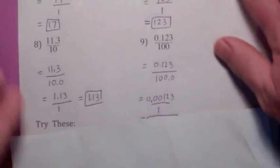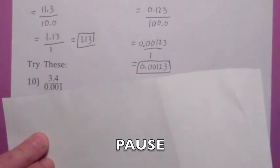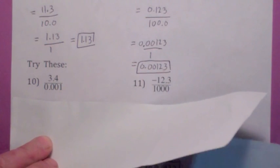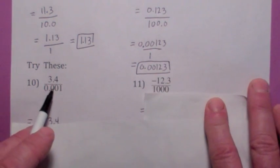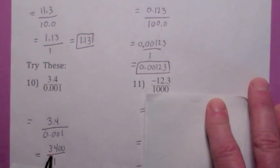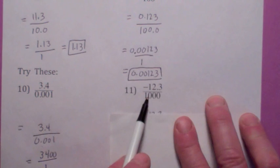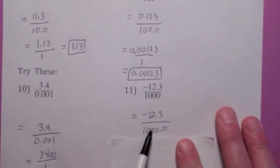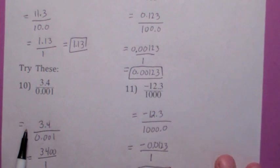Try these two. On the first one, to make the bottom into a 1, move the decimal over 3 to the right. The top becomes 3,400 when you move the decimal 3 to the right. On the last one, you want to move the decimal over 3 to the left to make the bottom a 1. Move the top over 3 to the left as well, and your final answer is negative 0.0123.